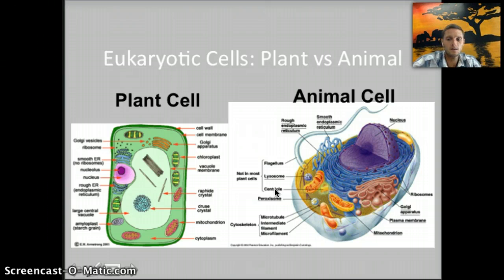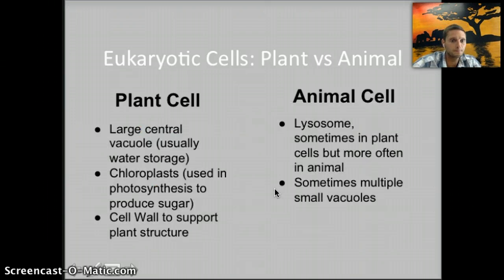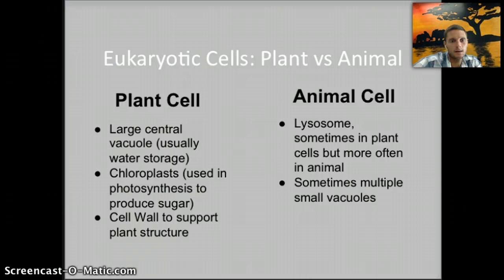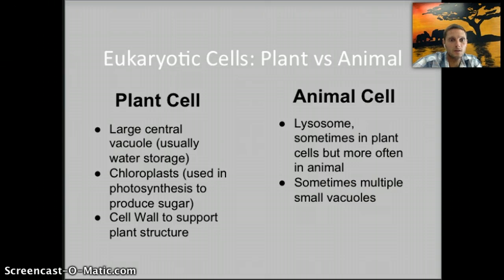Those are some of the big differences between plant and animal cells. That is it for 1.2 — looking at prokaryotes and eukaryotes and plant and animal cells. If you need additional information, your textbook is a great place to turn to, with nice images and descriptions of these organelles in even more detail, and there are also lots of resources online in addition to my website.